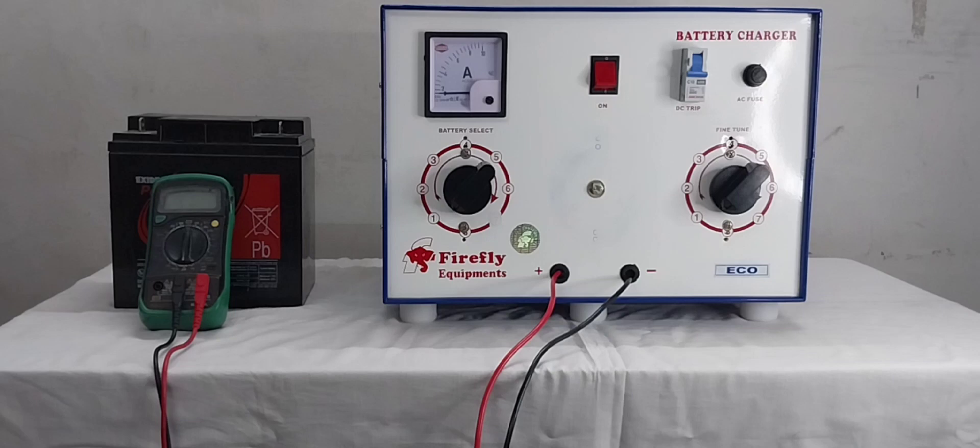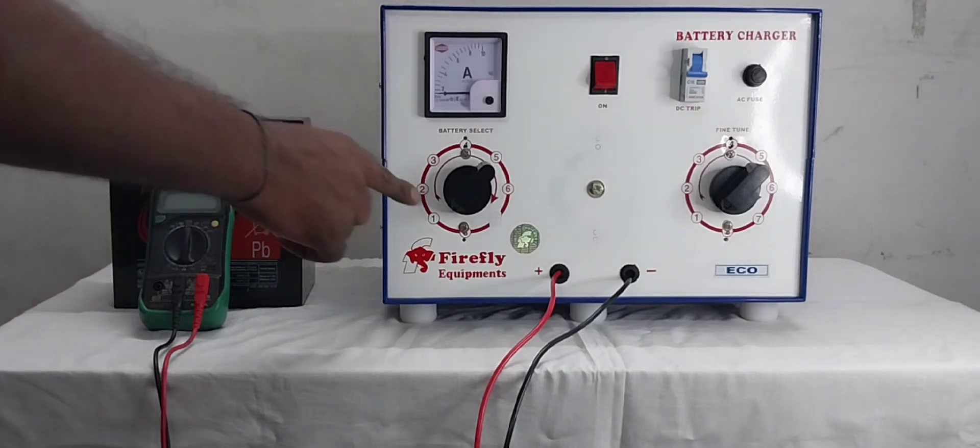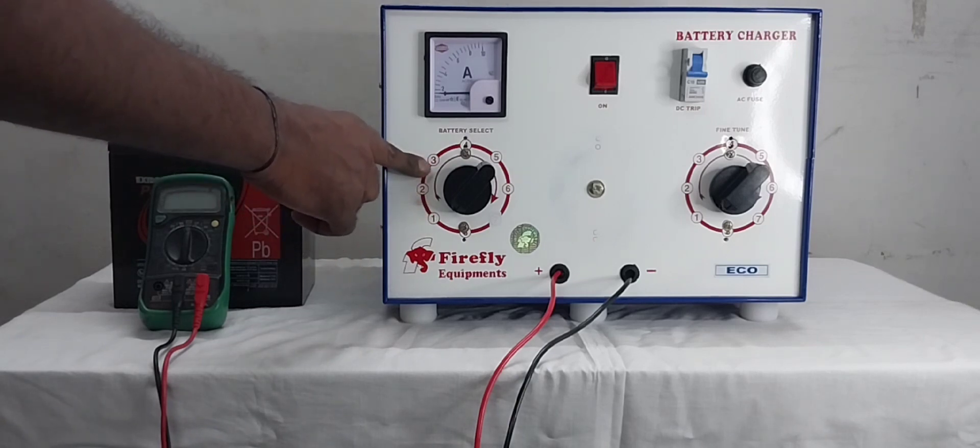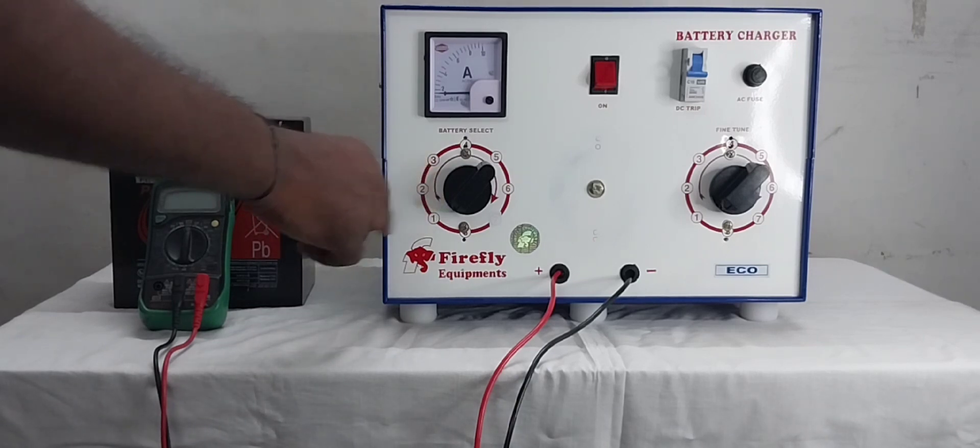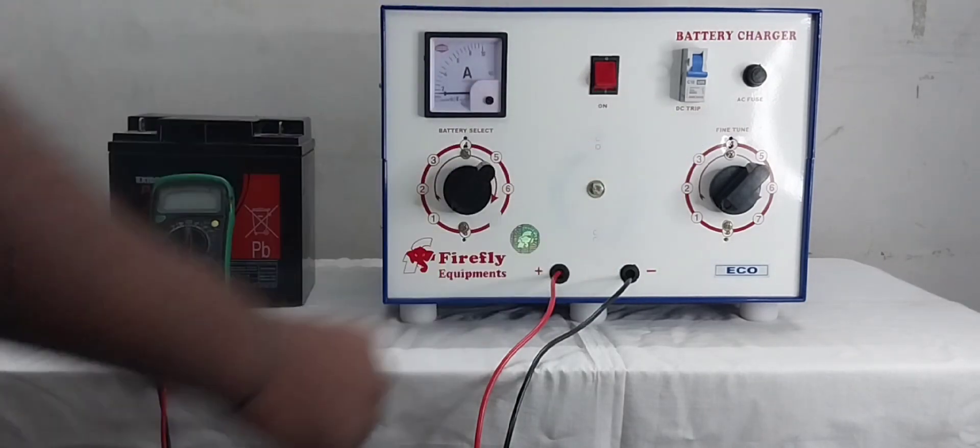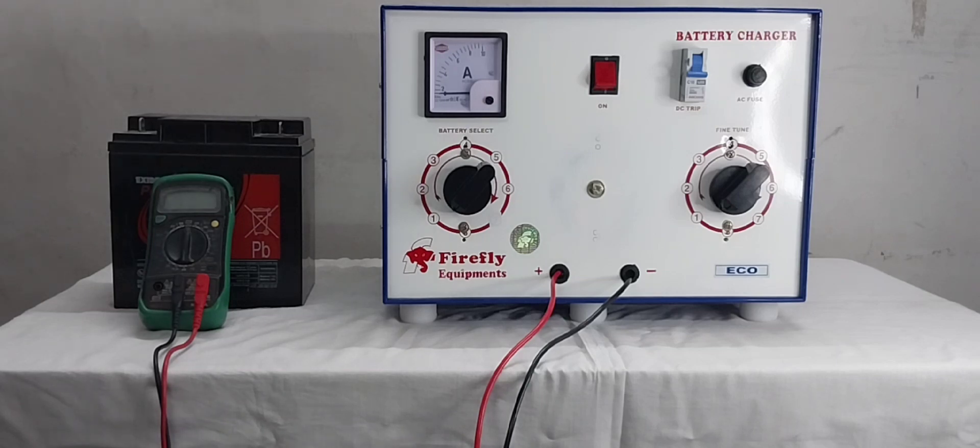First, battery selector. We can select number of batteries by this rotary. Next, fine tune. This rotary we can adjust charging ampere.